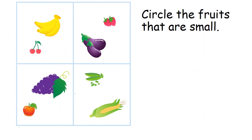Let's circle the fruits that are small. Correct! The cherries are small. Yes! The strawberries are small. Correct! The apple is small. Yes! The green peas are small.